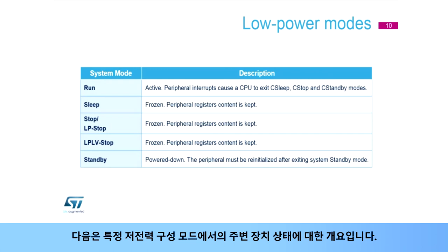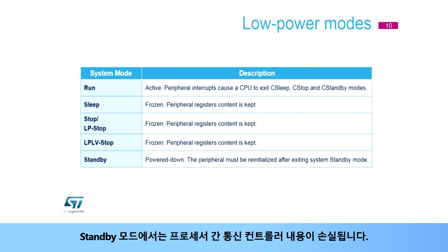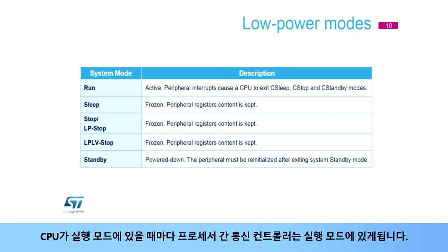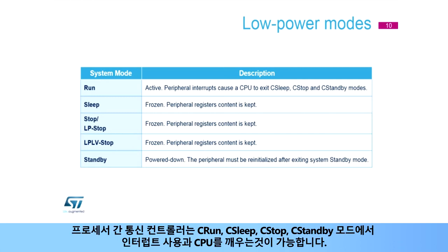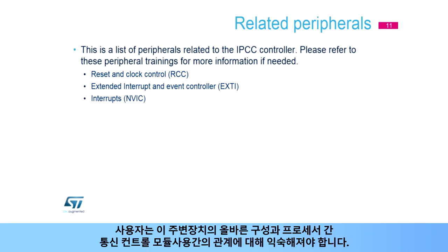Here is an overview of the peripheral status at specific low-power configuration modes. The Interprocessor Communication Controller is not able to change states in sleep and stop modes. In standby mode, the Interprocessor Communication Controller content is lost. The IPCC will be in run mode whenever a CPU is in run mode, and is able to interrupt and wake up a CPU in C-run, C-sleep, and C-stop modes. Here is a list of peripherals related to the IPCC module. Users should be familiar with all the relationships between these peripherals to correctly configure and use the IPCC module.